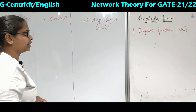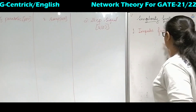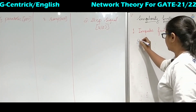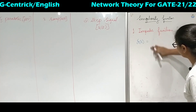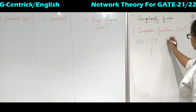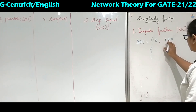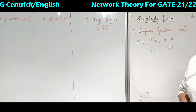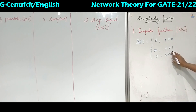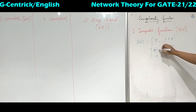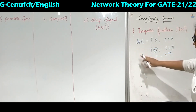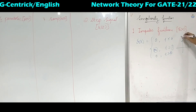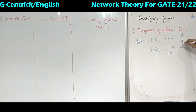Coming to the first one, that is the impulse function. We can define this function and denote it by del of t. This is nothing but: 0 for t less than 0, infinite for t equal to 0, and 0 for t greater than 0. At t equal to 0, we have the value of the impulse function as infinite. We can draw this graph with del of t on the vertical axis and t on the horizontal axis.